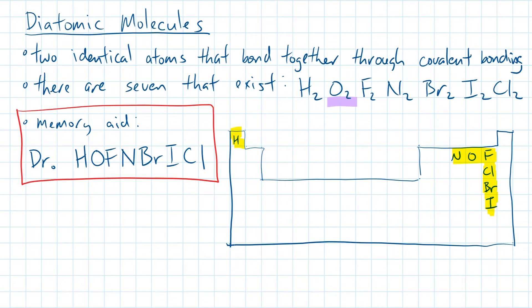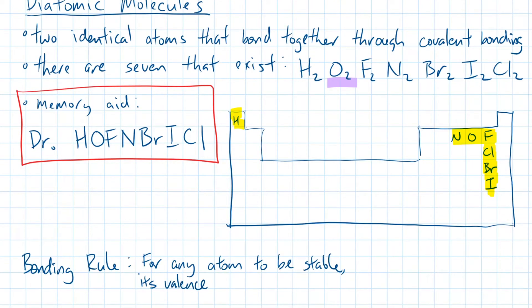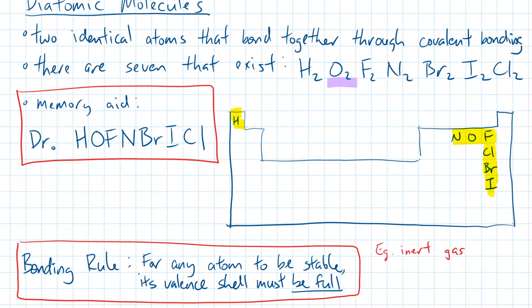Remember rule number one? All atoms need their valence shell to be full to become chemically stable. Most atoms need eight electrons in their valence shell to be full. And once the outer shell is full, it forms something called a stable octet. Keep this in mind when we start drawing these diagrams called Lewis structures.